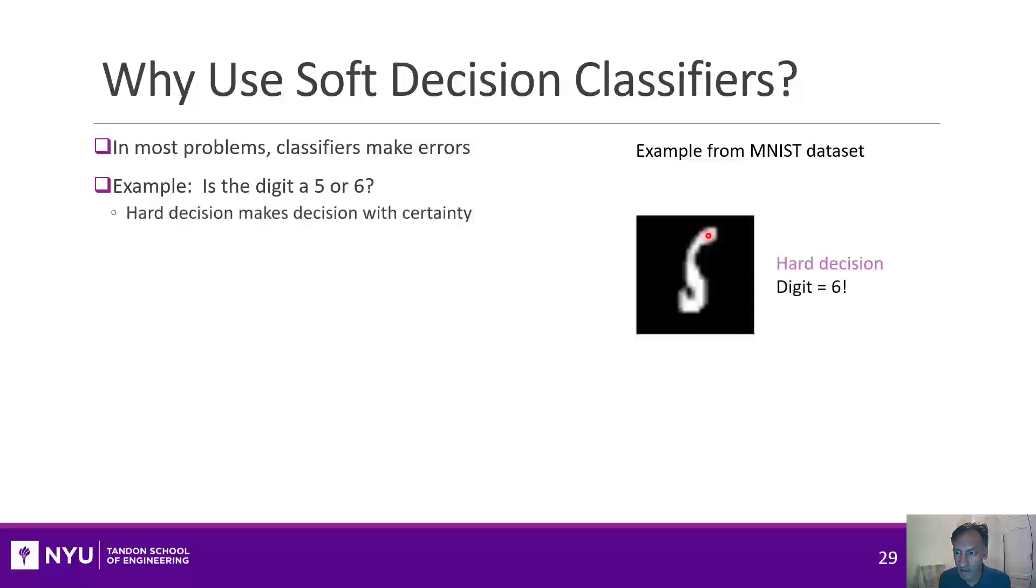A hard decision classifier will look at this and make a decision and say, one way or the other, this digit is a 6, for example. But actually, that decision could be wrong. Turns out in this case the digit actually is a 5. So even good classifiers make errors.